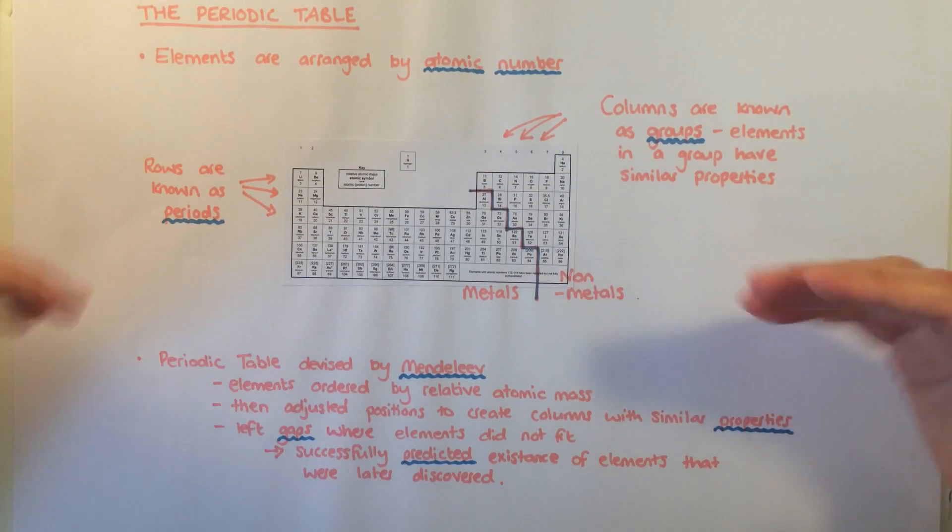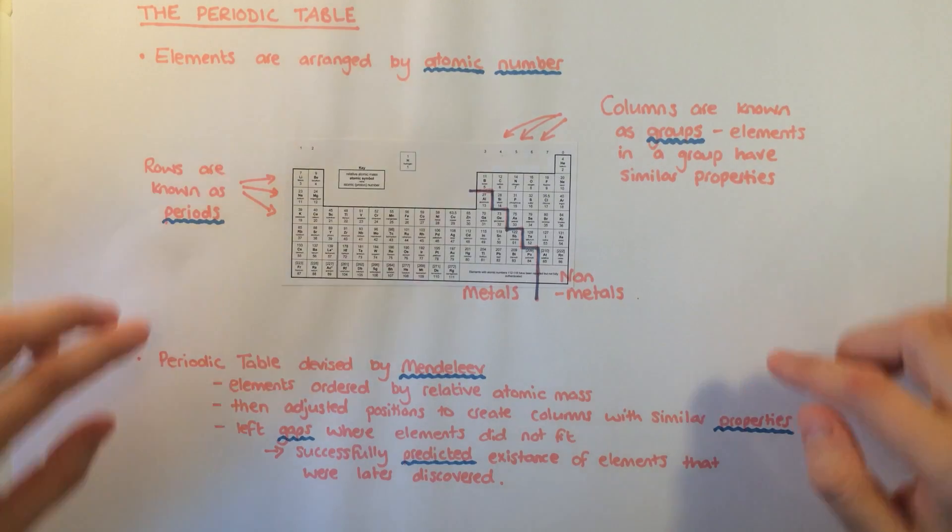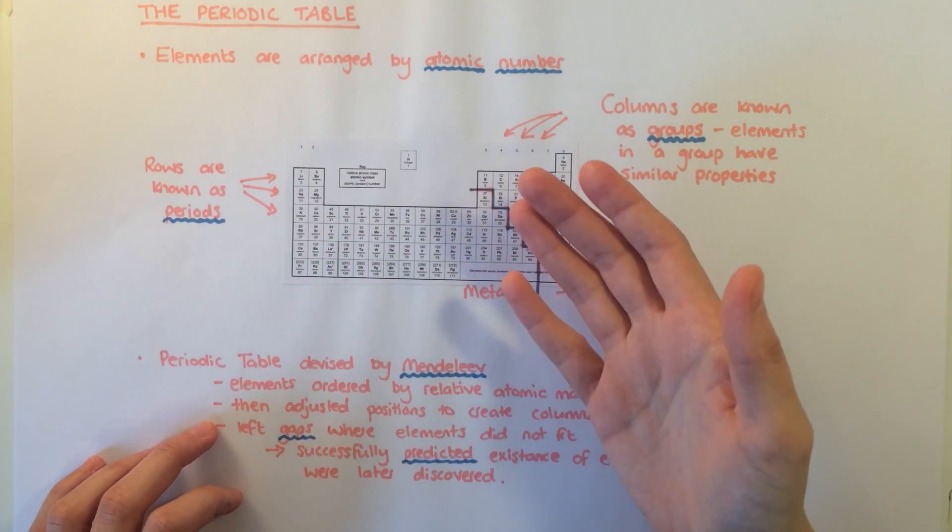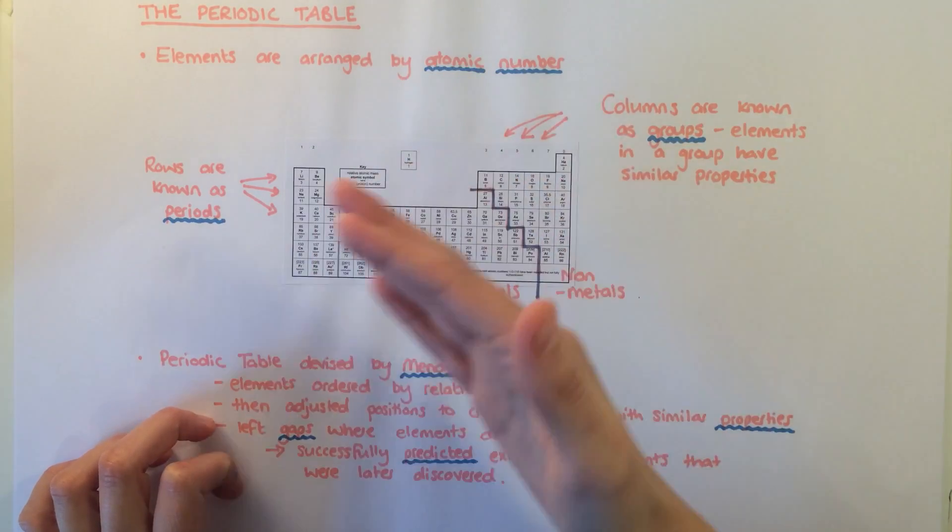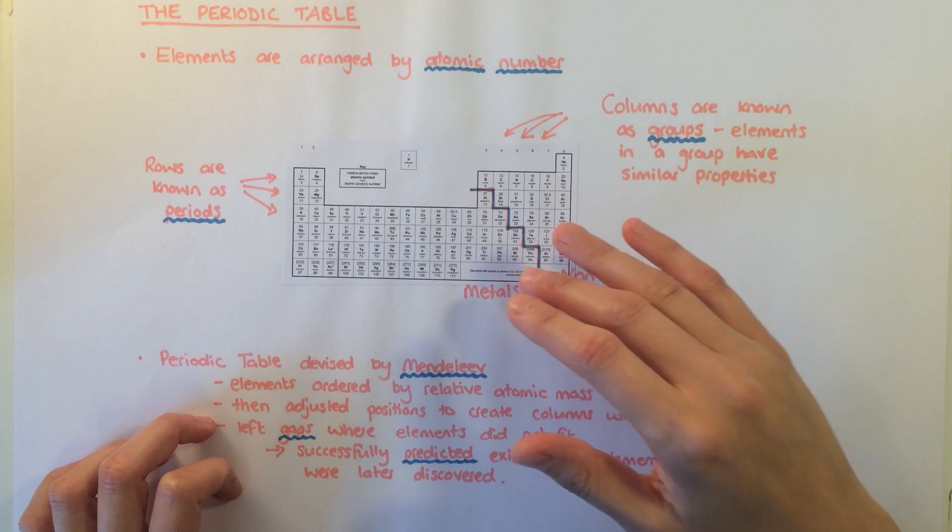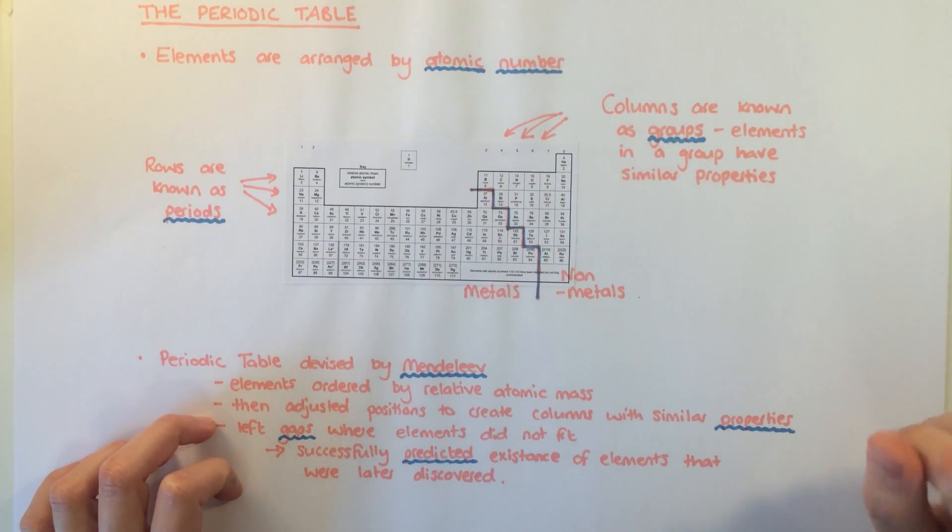The periodic table in this format was devised by Dmitry Mendeleev in 1869. He firstly ordered the elements by relative atomic mass. He then adjusted the layout based on the properties of the elements, which created the groups and periods. By doing this, gaps appeared where Mendeleev predicted an element should be, and in time these elements were all discovered.